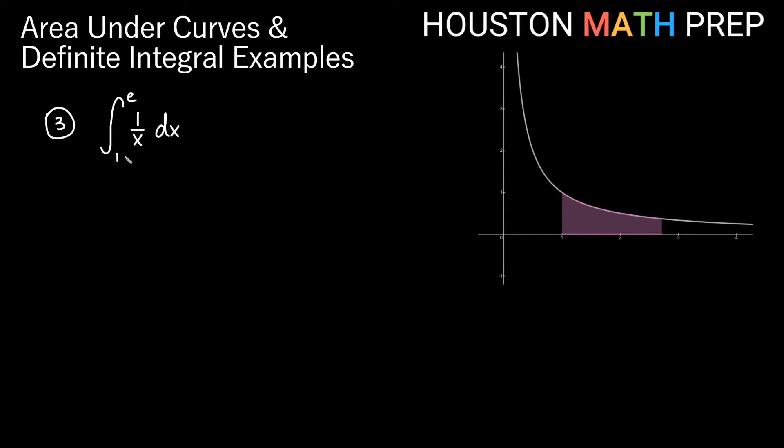Looking here, we have the integral from 1 to e, the constant e, of the function 1 over x dx. So we have the function 1 over x. Remember, e is about 2.7-ish and some change. So we have the area underneath this from 1 to a little beyond 2.7. Remember that this looks like a power rule, but this is actually the derivative of a function that we know called the natural log. So we take the antiderivative of 1 over x, we actually get the natural log of absolute value x evaluated from x equals 1 to x equals e.